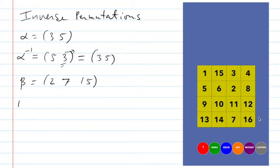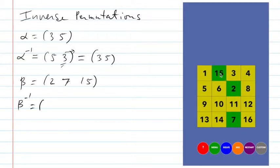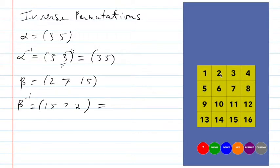I actually realized I didn't want to do that. So I can get those numbers back by just doing it in reverse: put the thing in position 15 back to position seven, and put that back into position two. So the inverse is going to be 15, seven, two. But I could write any of the numbers first, so I'm going to put the two first, go to the right, but loop around to get to the 15. So the inverse of (2, 7, 15) is (2, 15, 7).